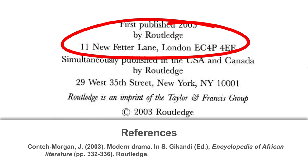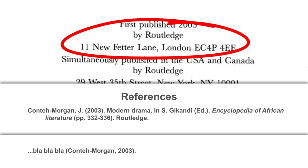Put it all together and this is the entry in the reference list: Conte Morgan, J. (2003). Modern drama. In S. Gikandi (Ed.), Encyclopedia of African Literature (pp. 332–336). Routledge. The text reference, of course, can look like this.